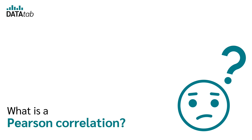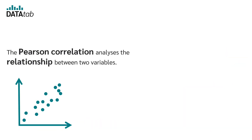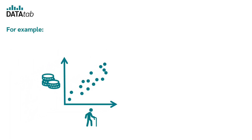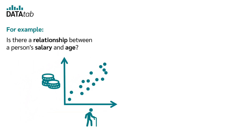What is a Pearson correlation? The Pearson correlation analyzes the relationship between two variables. For example, is there a relationship between a person's salary and age?